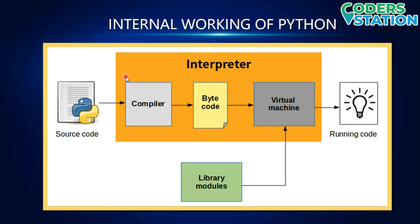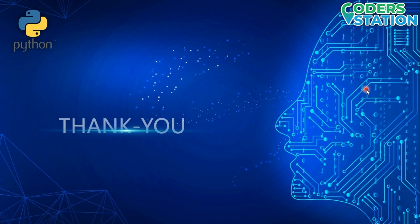To recap: first you write source code, then it is sent to the interpreter, then compiled. If any error is found, the compiler reverts back to you, you solve it, and it compiles again forming a bytecode. The bytecode is then sent to the virtual machine for processing, and you get a running code as output.